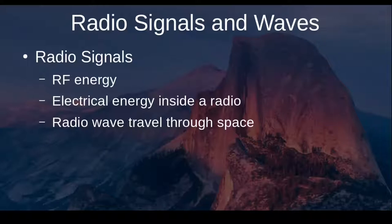A radio signal has essentially two components: the electrical energy that's produced within the radio, and also a radio wave that is created at the antenna and propagates or travels through space. The energy produced is known as RF energy, or radio frequency energy.